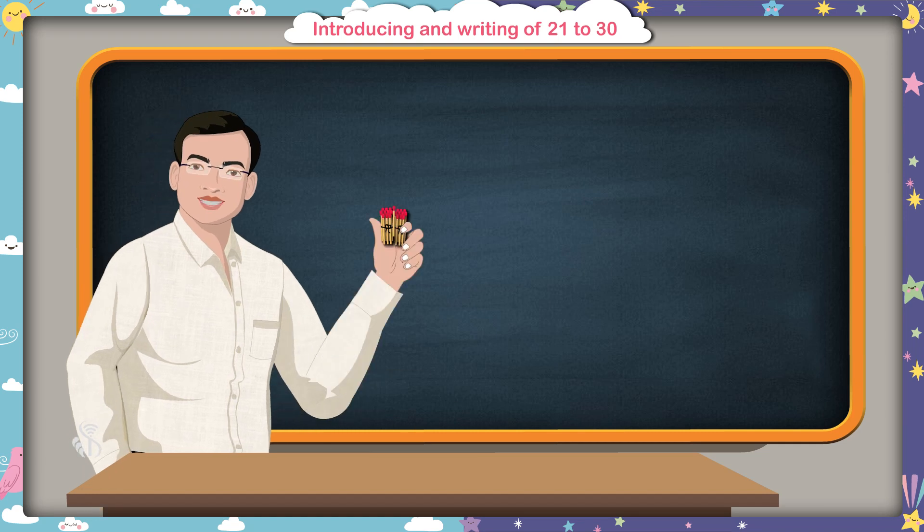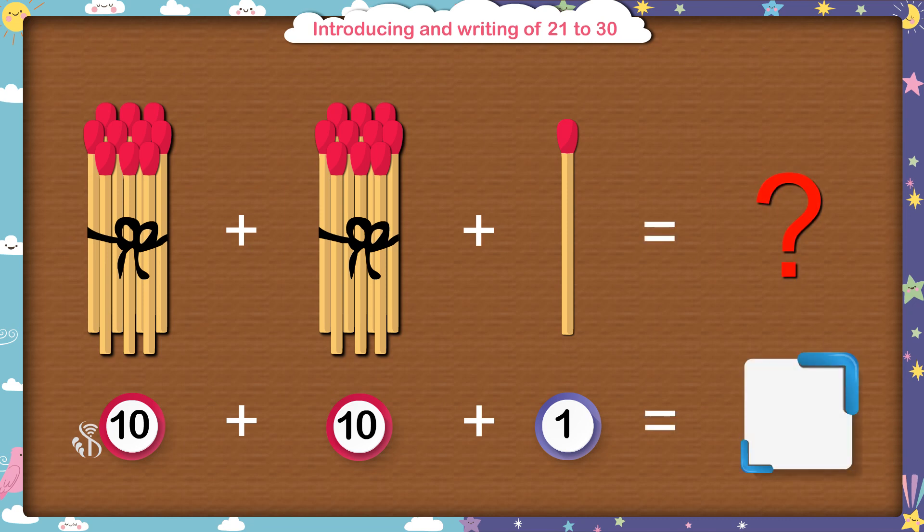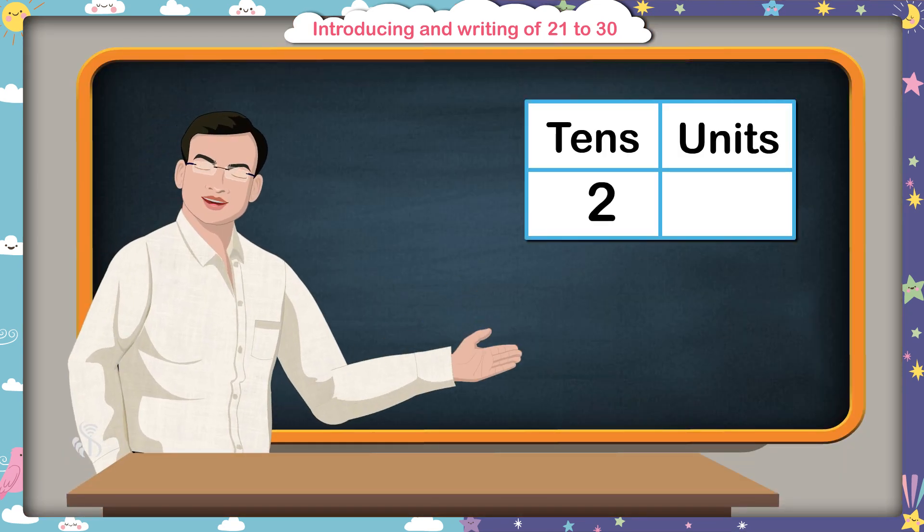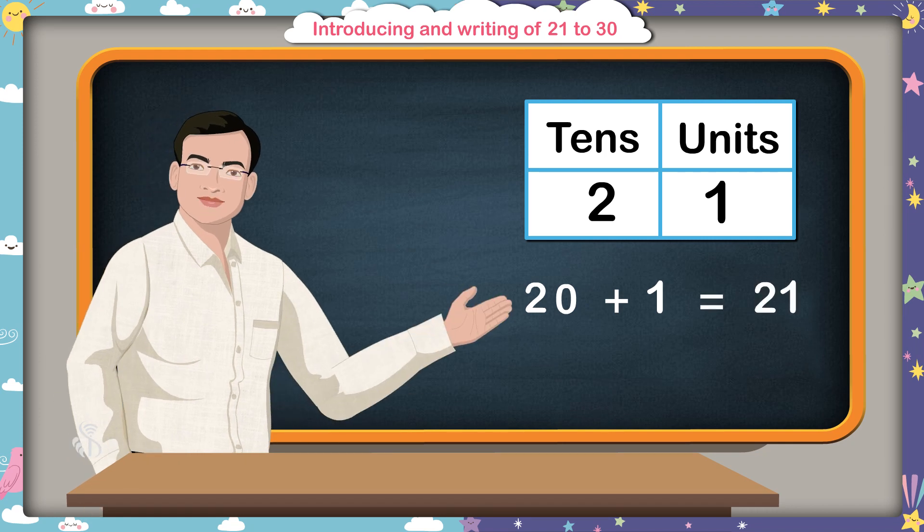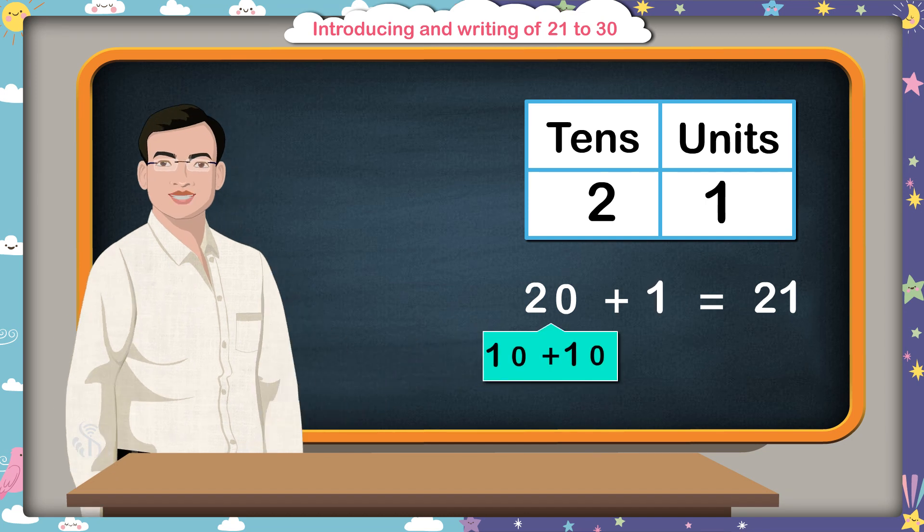I have 21 math sticks in my hand. I have made 2 bundles of 10 math sticks each and this is 1 single math stick. So, how many math sticks are there in all? Sir, there are 21 math sticks. That's right. Here, I will write 2 in tens place and 1 in units place. That means 20 and 1 make 21. We can also say that 2 tens and 1 unit together make 21. And number 21 is written as 21.